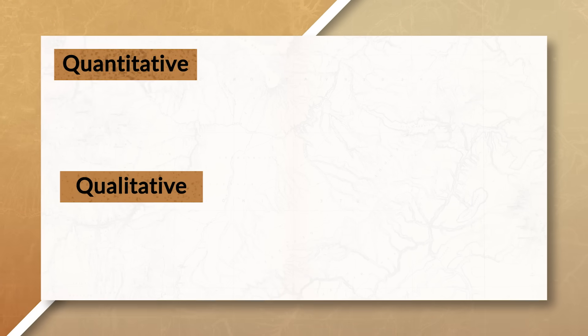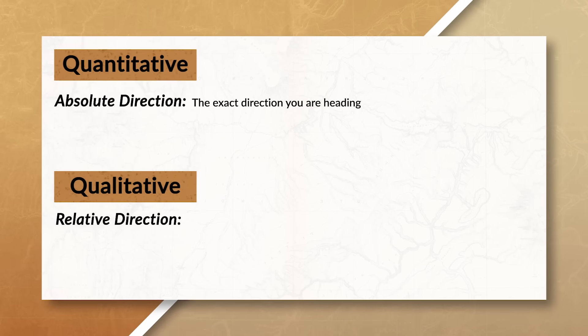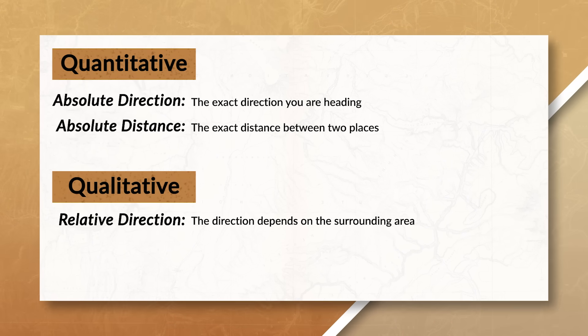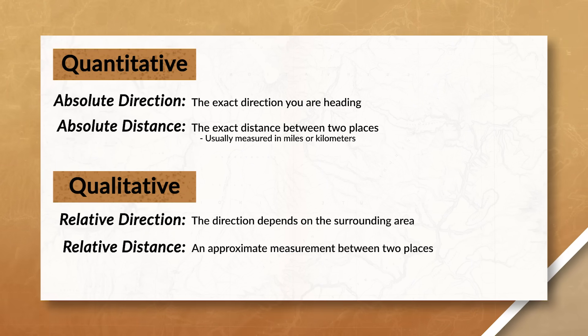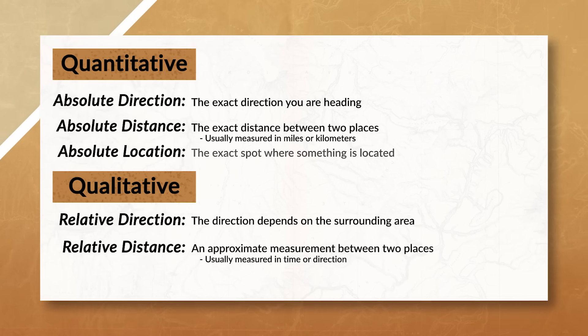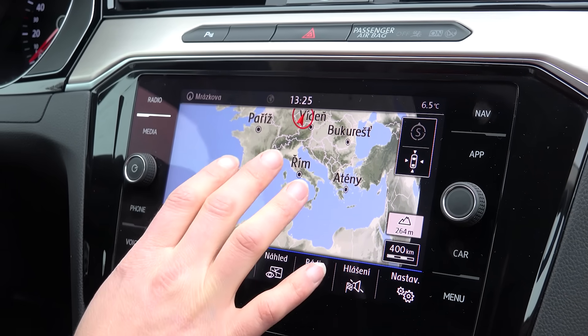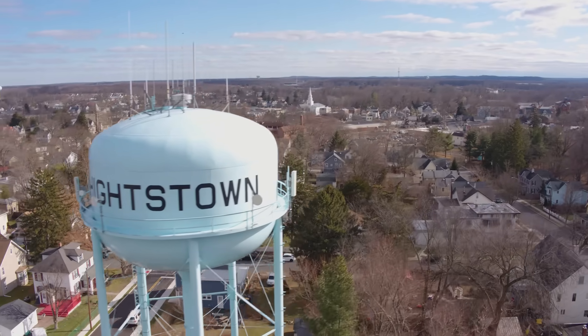When using reference maps, you'll often be looking at absolute and relative distance, which can sometimes be confused with absolute and relative location or direction. Absolute direction is the exact direction you are heading — for example, if you were traveling east, your compass will show 90 degrees. Relative direction is when you use the surrounding area for direction — for example, I'm north of you right now; it's not precise and could change. Absolute distance is the exact distance between two places, usually measured in miles or kilometers — for example, Chipotle is 2.5 miles from the XL Energy Center. Relative distance is an approximate measurement usually talked about in time — for example, Chipotle is about 6 minutes away. Absolute location is the exact spot where something is located, such as GPS coordinates using longitude and latitude. Relative location is a description using surrounding geographic features — for example, my house is near the water tower and the fire station.